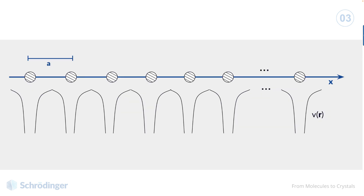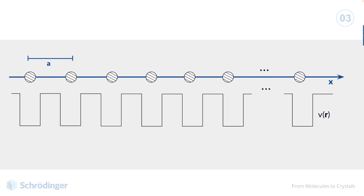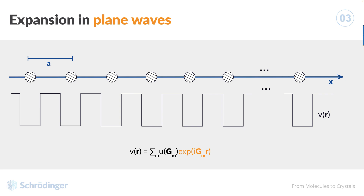Let us zoom into a section of the circle. Since the atoms are arranged periodically, the potential v is also periodic. This means that the potential at a certain point r is equal to the potential at a point which lies a translational vector along x away from r. The potential has some arbitrary shape from the interatomic forces. For ease of visualization, let us consider a square wave function as the potential. From mathematics, we may know that we can represent any periodic function by a Fourier series, which is a sum of sine and cosine waves. However, instead of writing sine and cosine functions, we can also use the equivalent exponential form of such plane waves. These plane waves depend on some vector g, and have a prefactor u. In this notation, we sum over different g vectors, indicated by the subscript m.